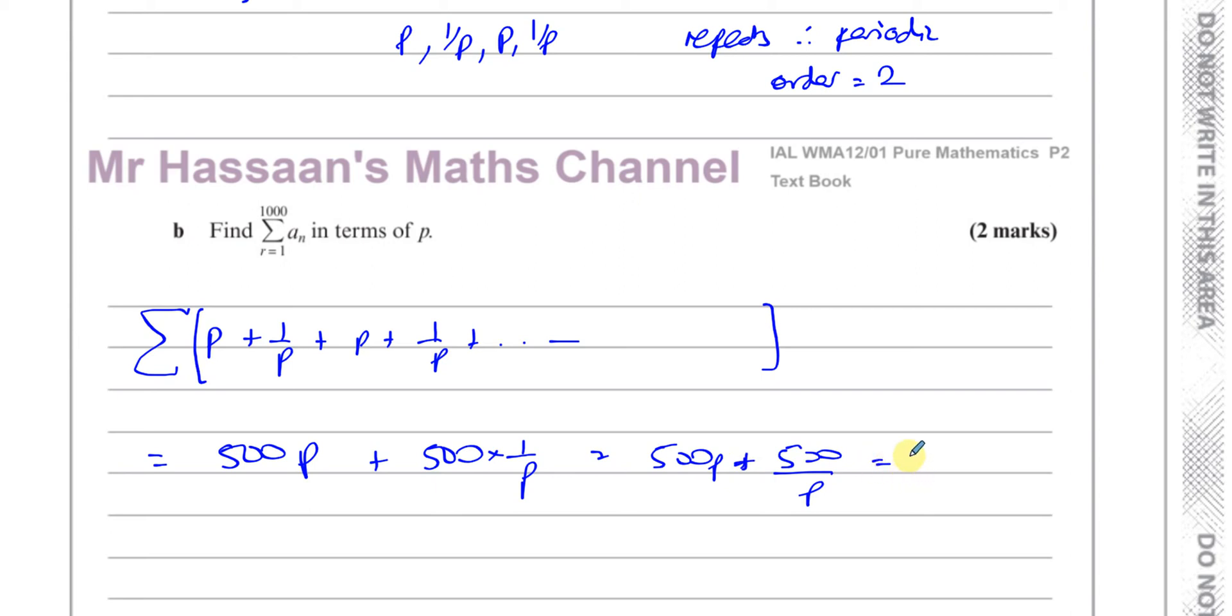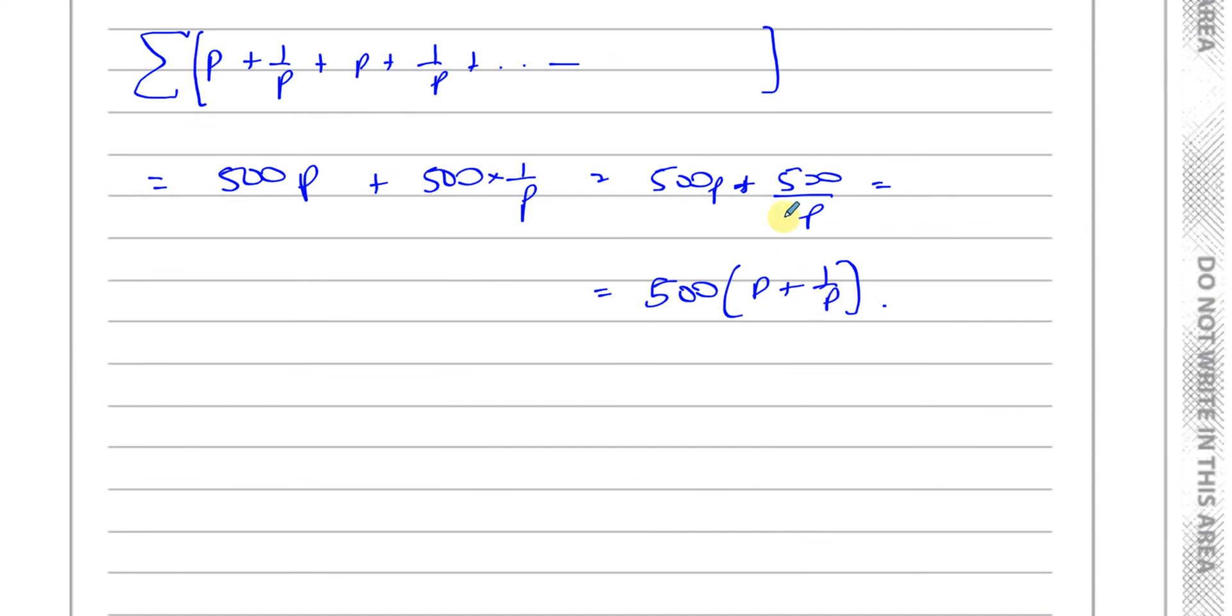If you want to, you could also take out 500 as a factor. You could say 500(p + 1/p). You could also write this as one fraction. You could have 500 and you can write this as (p^2 + 1)/p. You could write it like that if you want, and that would also be correct.